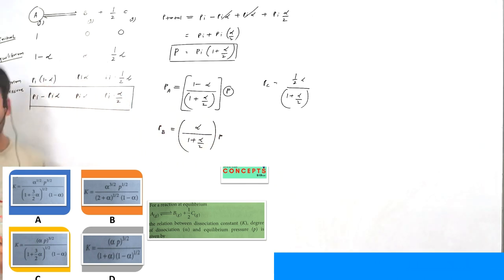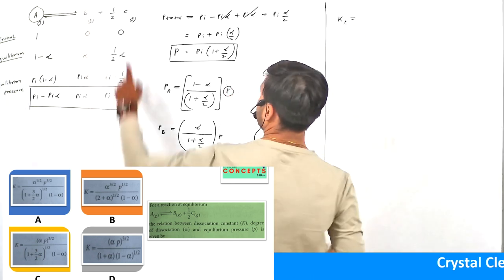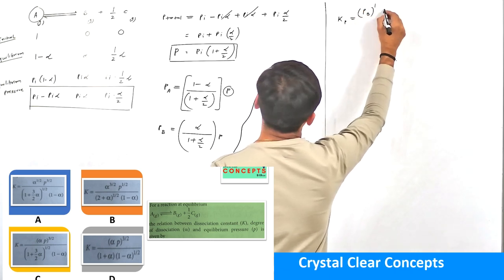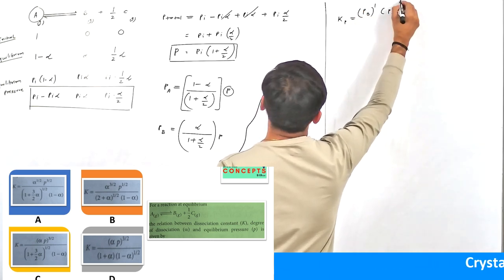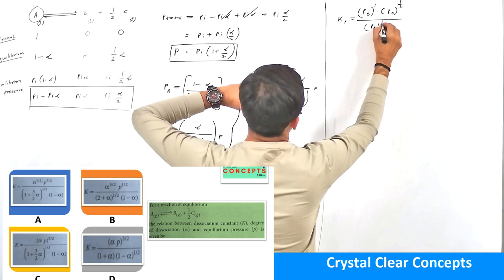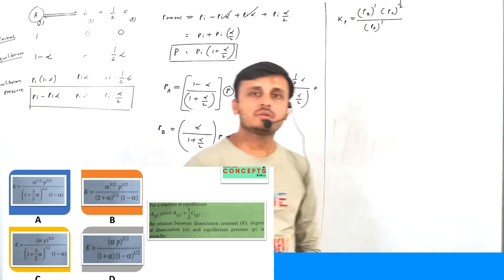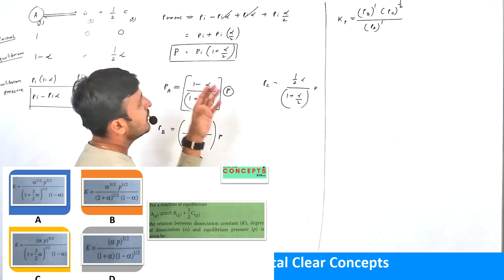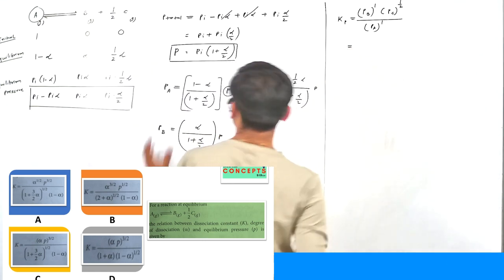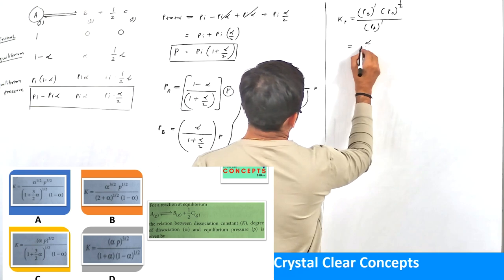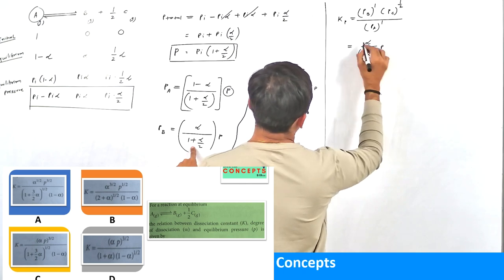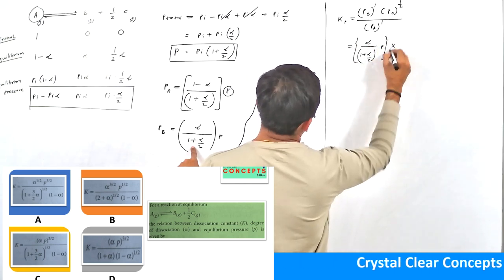We have the KP formula. For this particular reaction, KP is written as: PB raised to 1, multiplied by PC raised to half, divided by PA raised to 1. The stoichiometric coefficients become the powers when writing the KP equation. Substituting, PB value is α / (1 + α/2) × P.